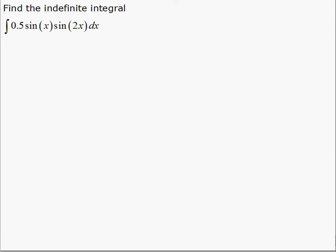In this example, we're asked to integrate 0.5 sine x multiplied by sine 2x dx. This is probably the first example we've seen where we're asked to integrate with two different arguments of a sine function.